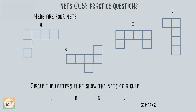Let's have a look at a typical GCSE style question about nets. This question provides four nets and asks you to identify the ones which show the nets of a cube. For this question we can visualize how the net would fold up into a 3D shape.